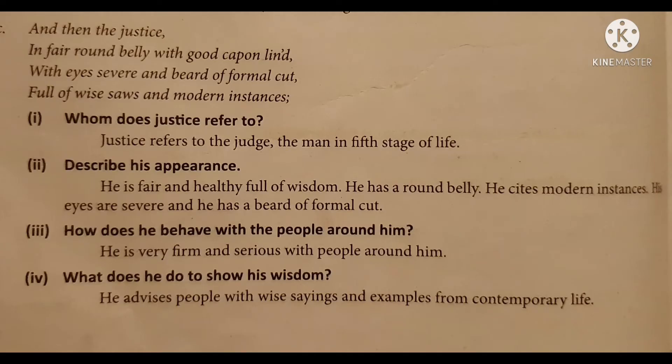Question three: 'And then the Justice in fair round belly with the good capon lined, with eyes severe and beard of formal cut, full of wise saws and modern instances' — whom does the Justice refer to? The Justice refers to a judge — the man in the fifth stage of life. His appearance: he is fair and healthy, full of wisdom, has a round belly, his eyes are severe, and he has a beard of formal cut. He is very firm and serious with people around him because of his maturity and wisdom. He advises people with wise sayings and examples from contemporary life.